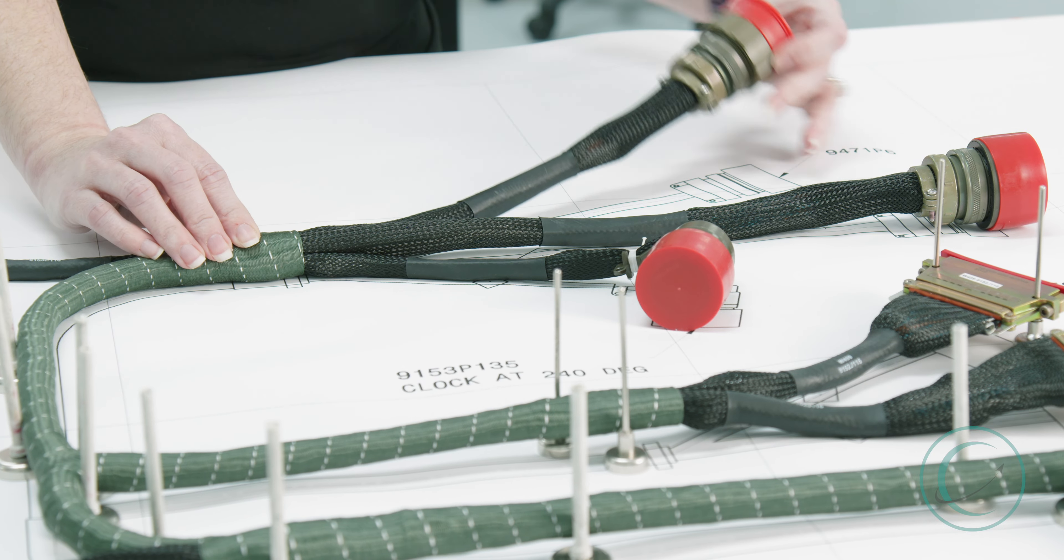The purpose of the braid is to protect this part of the harness while allowing the connectors some flexibility for installation into the aircraft.